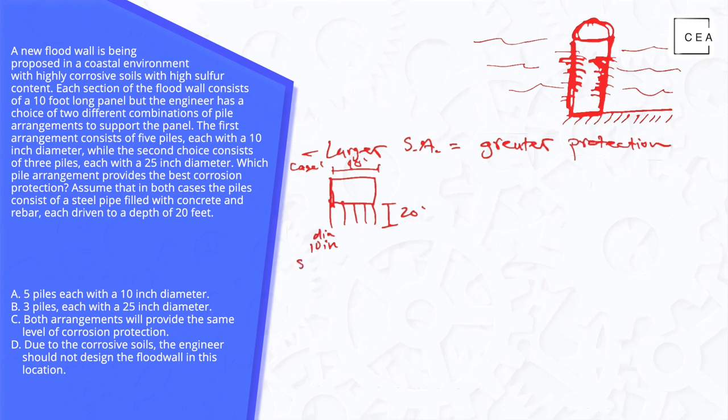So we'll calculate our surface area. Surface area is going to be equal to 2πr, the circumference of the circle that we talked about earlier, times the depth.